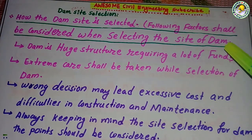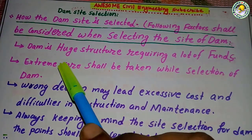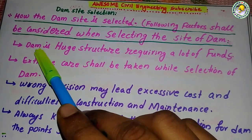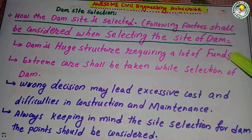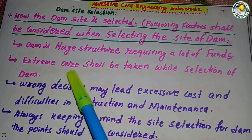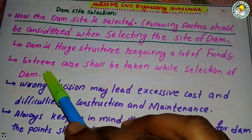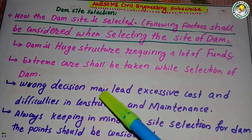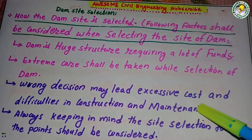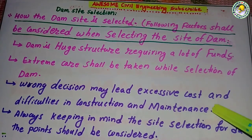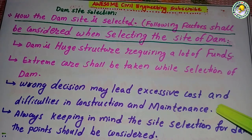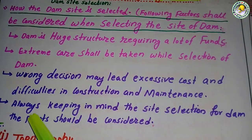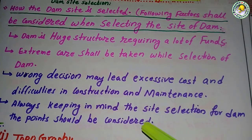First of all, we know that a dam is a huge structure requiring a lot of funds. Extreme care shall be taken while selecting the dam structure. A wrong decision may lead to excessive cost and difficulties in construction and maintenance. So always we should take the correct decision while selecting the dam site, keeping all points in mind very carefully.